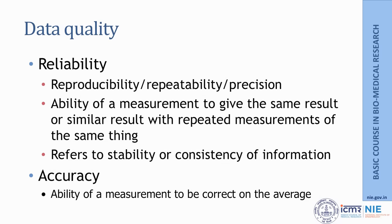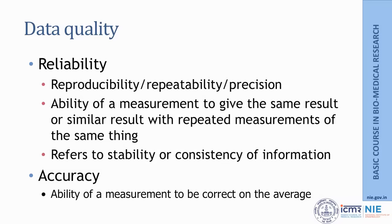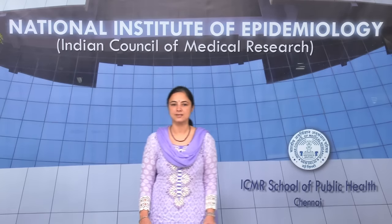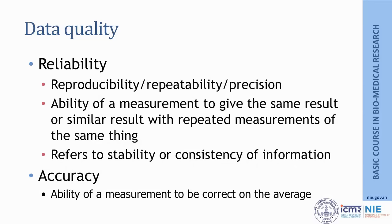Today we will discuss two main principles of data quality: reliability and accuracy. Reliability means that your study should have repeatability and precision. If the same study is repeated by different investigators, or the same measurement is done at different time points, you should still be able to get more or less similar results. It also refers to stability and consistency of the information. However, reliability does not ensure that your data is accurate.